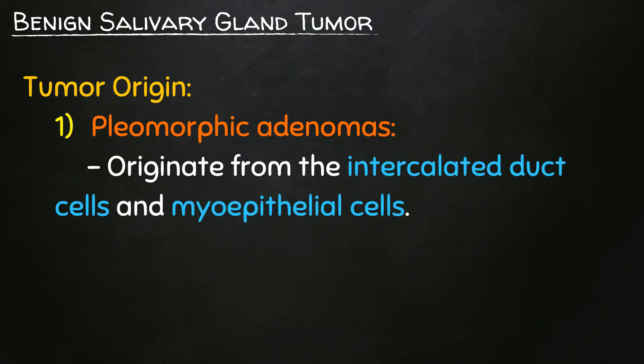Pleomorphic adenomas originate from the intercalated duct cells and myoepithelial cells. How can we relate pleomorphic adenomas to intercalated duct cells and myoepithelial cells? Let's see.